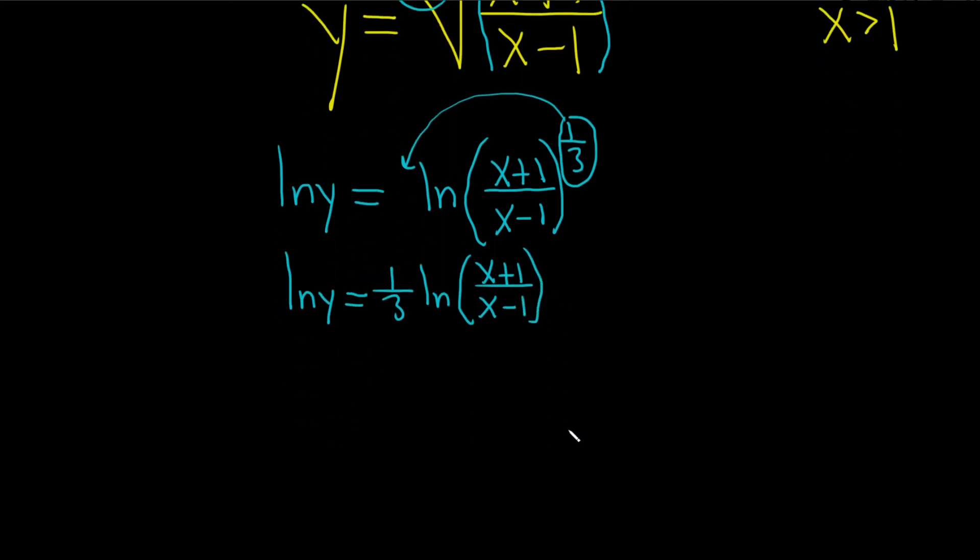And now we can use further properties. We have a fraction—it turns into subtraction. That's the quotient rule for logs. So this is the natural log of y equals 1 third parentheses, natural log of the top piece, so ln of x plus 1 minus the ln of the bottom, ln of x minus 1, just like that.